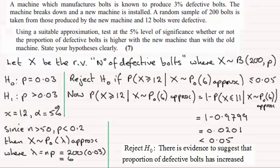So what does that mean? Well, it means that we reject the null hypothesis. In other words, there is evidence to suggest that the proportion of defective bolts has increased. As I say, that's one way that you can do this question. The other way is to look at critical values, and I'll do that in the accompanying video.